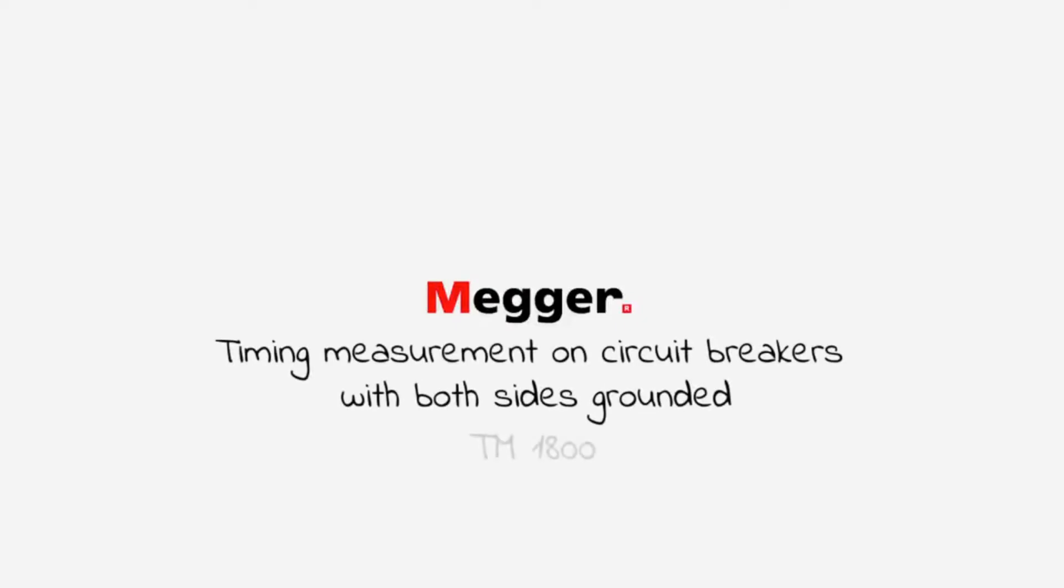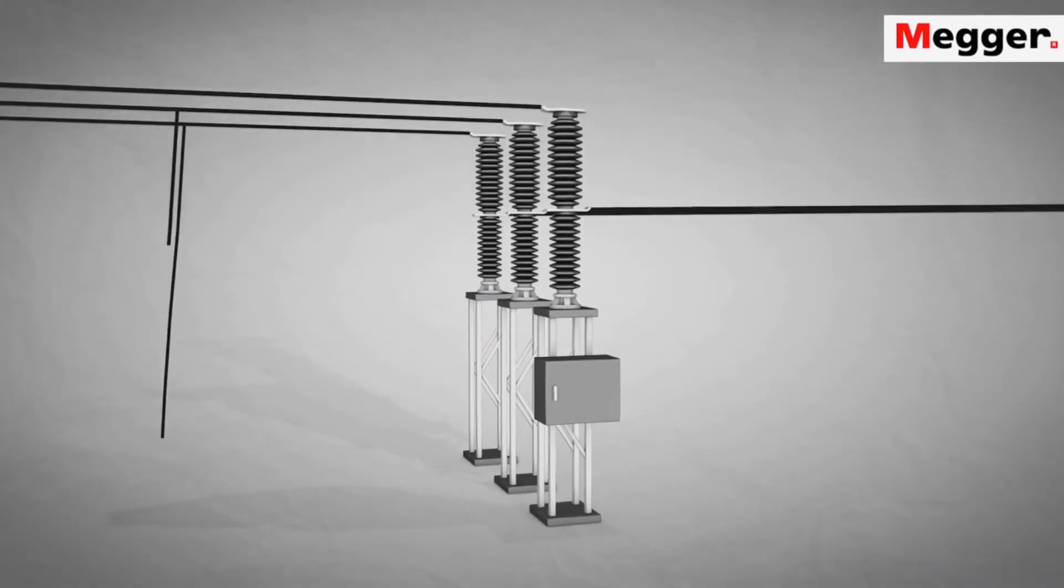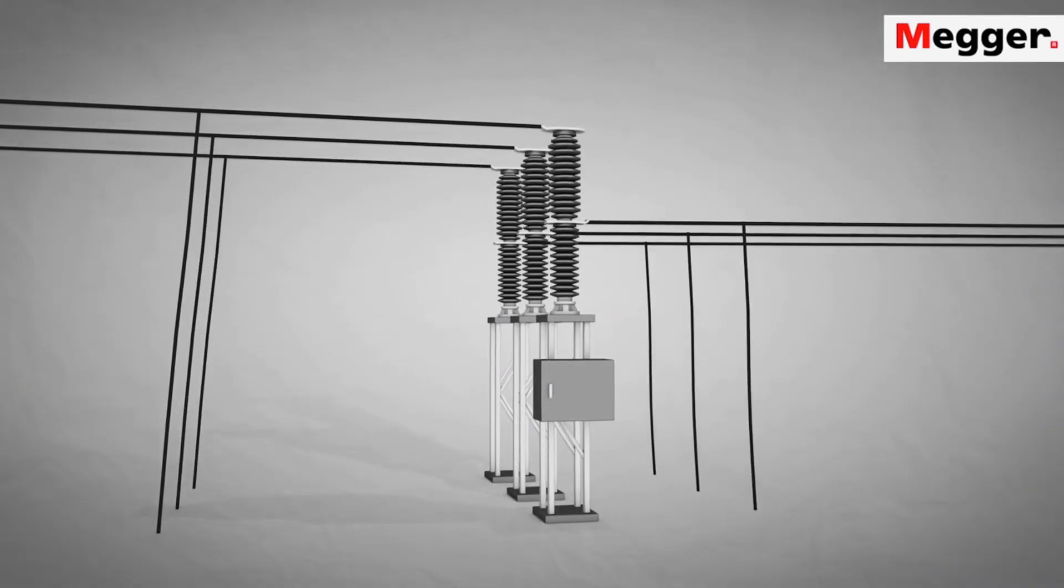Timing measurement on circuit breakers with both sides grounded. According to international safety standards, a circuit breaker should be grounded on both sides while work is performed.